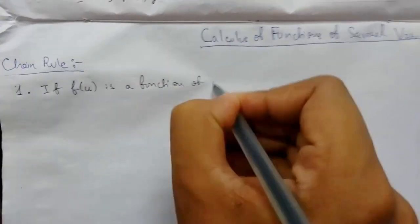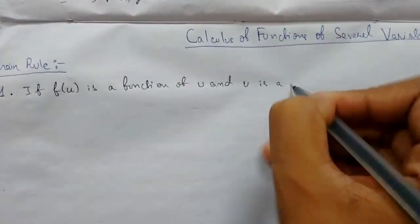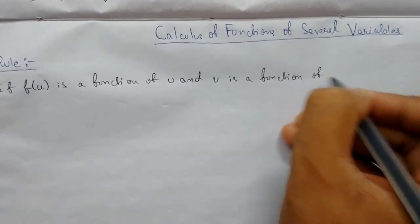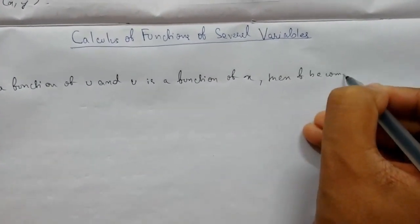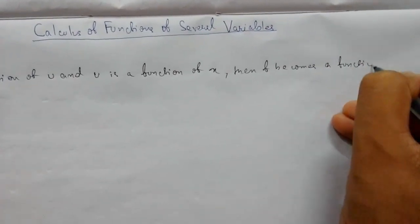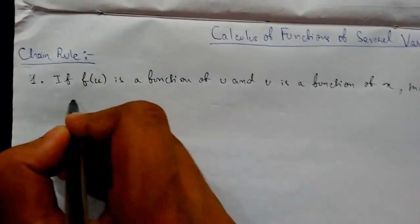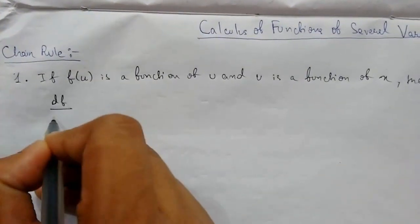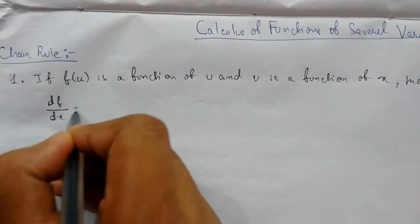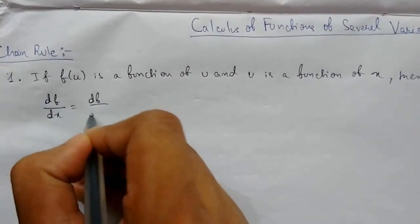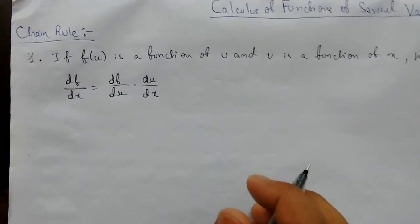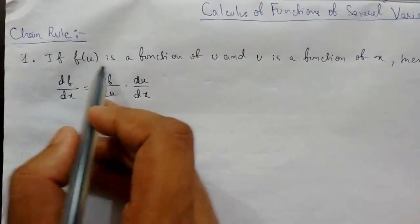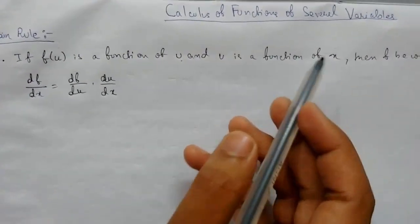Our first chain rule: if f(u) is a function of u, and u is a function of x, then f becomes a function of x. We can say that df/dx equals (df/du) times (du/dx). This is our first definition of the chain rule.